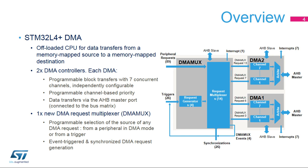L4 Plus DMA features two DMA controllers. For each DMA controller, it is possible to do programmable block transfers with seven concurrent channels, each of which are independently configurable, with programmable channel-based priority, and data transfers via the AHB master port connected to the bus matrix.